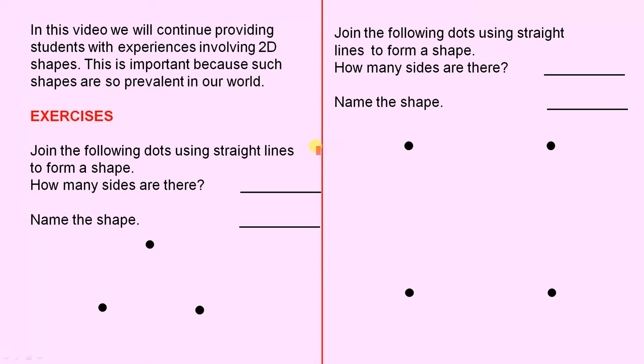Here are some exercises. Here we have three dots. Join the following dots using straight lines to form a shape. How many sides are there? Name the shape. You can give students whatever prompts they need to do this question.